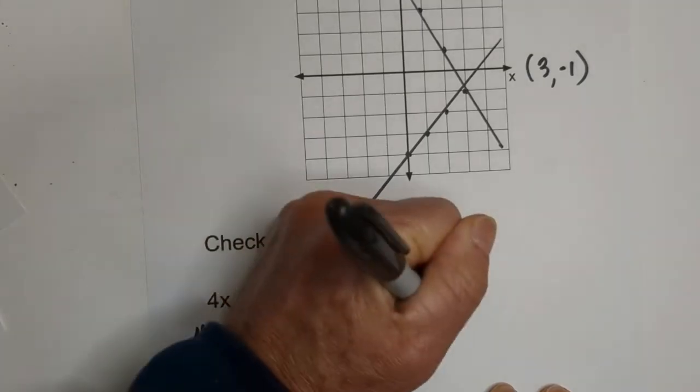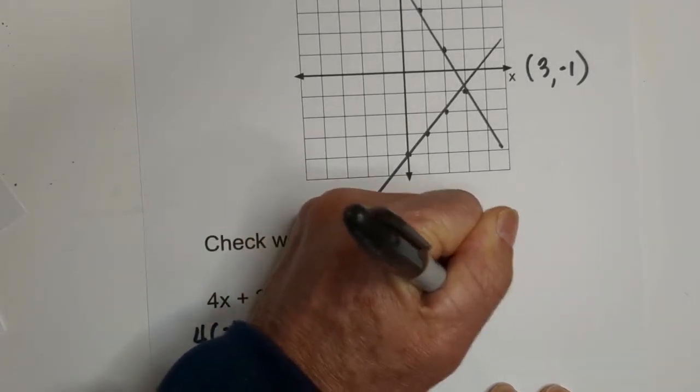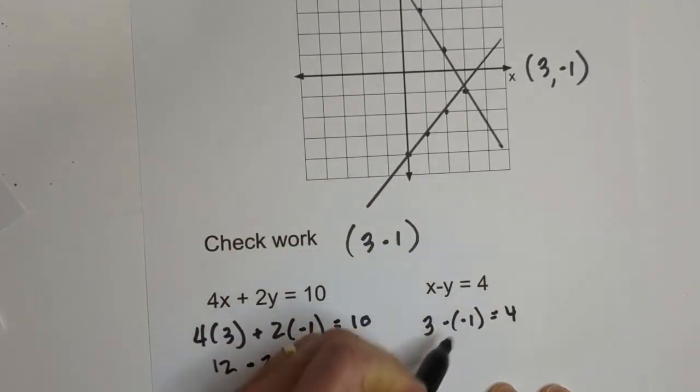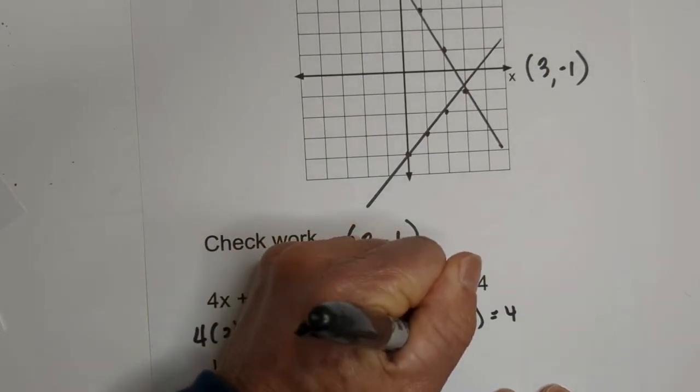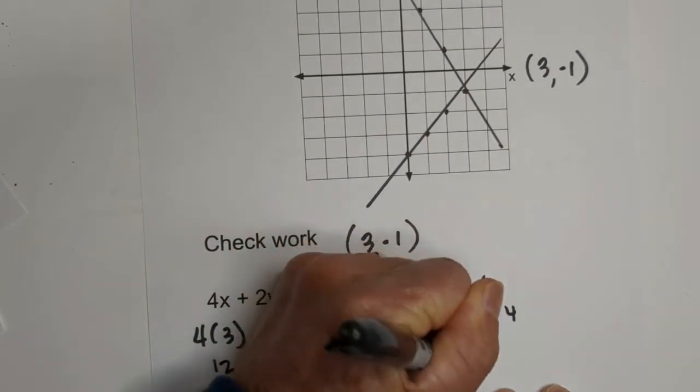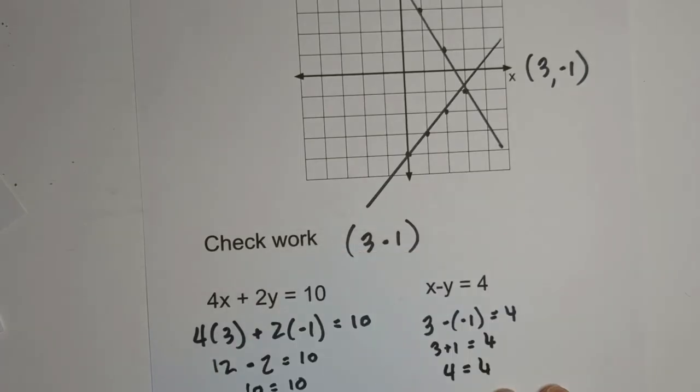So let's check on the other side. We have 3 minus negative 1 equals 4. Remember, minus a negative is like 3 plus 1 equals 4. And they do work out.